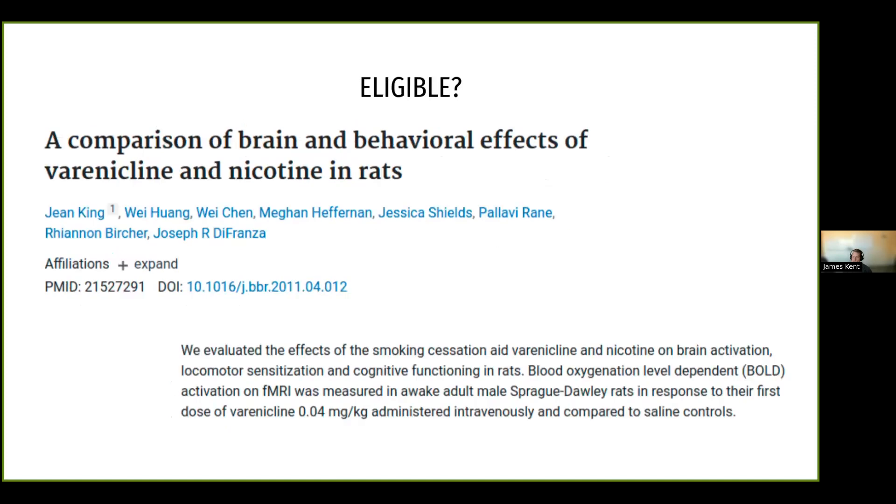And now if we're looking at the eligibility phase, now we're looking at a comparison of brain and behavioral effects of varenicline and nicotine in rats. And what we find here is that, yes, it was relevant, but it's not being done in humans. So this makes the study ineligible for inclusion, even though they are using fMRI and they are using a nicotinic acetylcholine receptor agonist for this study, the fact that it's not in humans means that we would exclude this study.